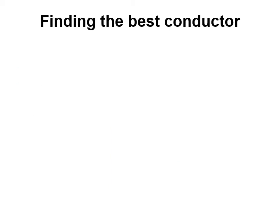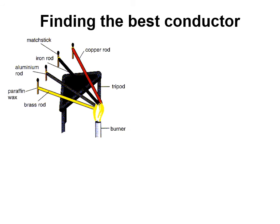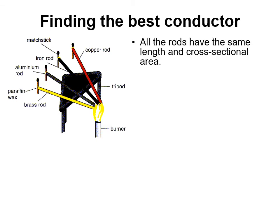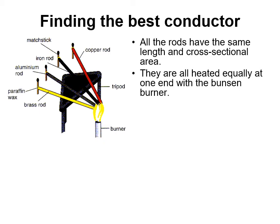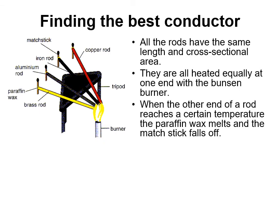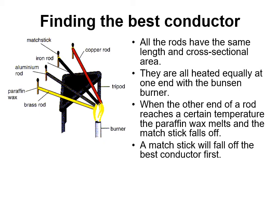To find the best conductor experimentally, the classic method uses a Bunsen burner, several metal rods of the same length and cross-sectional area to keep it a fair test, with matchsticks attached by wax at the end. All rods are heated equally at one end. The best conductor will transfer heat fastest, melt the wax, and cause its matchstick to fall off first. In this experiment, copper is typically the best conductor — the wax on the copper rod melts and the matchstick falls off first.